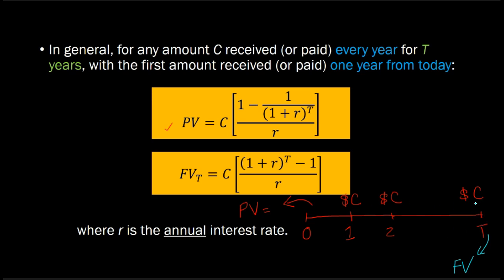It's the same cash flow stream lasting for the same number of years T, but here your interest is more in future value, and so this formula applies.